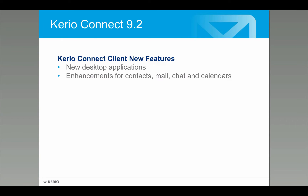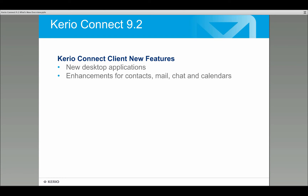Now for new features in Kerio Connect 9.2. A lot of work was done with the end user in mind. We have new desktop applications for Windows and Mac, which give the full email, calendaring, and chat functionality that used to be part of our web client only — now as a native desktop application. We also continued improving contacts, mail, chat, and calendaring to make them a bit nicer and easier to use.